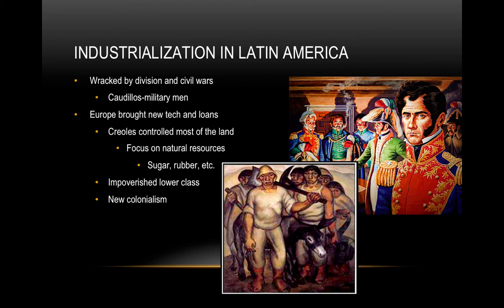Sometimes the caudillos will protect the leader, but other times they will kick that leader out and make themselves president or whatever it may be. So there's a lot of instability, which doesn't make it a good place for an industrial revolution. However, Europeans will see it as a possibility to invest in and make money, so they'll bring technology, loans, and money to set up businesses. The Creoles who own most of the land say they'll do a little of that, but they really don't focus on it. Instead, they say they're making plenty of money selling natural resources from the land — whether mining iron, silver, rubber, or whatever — and sending it to Europeans or to the United States.